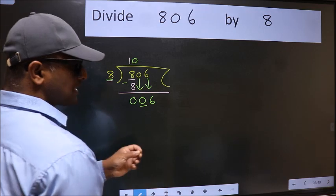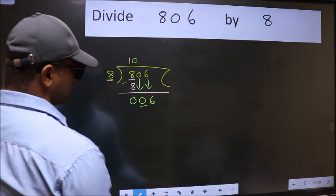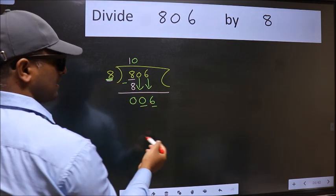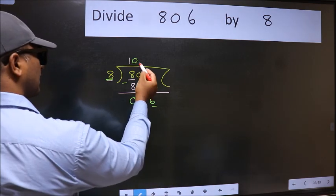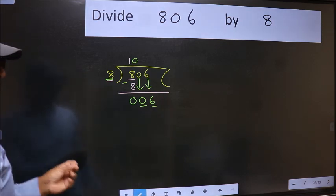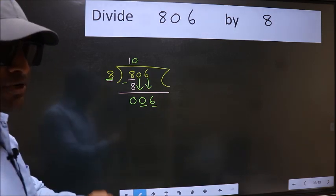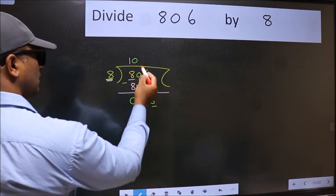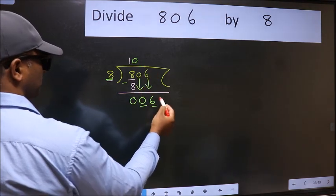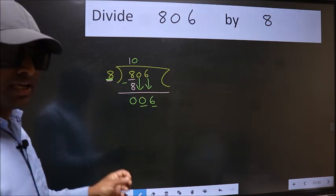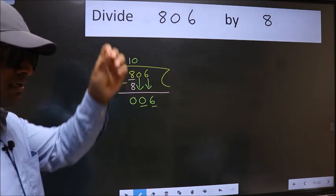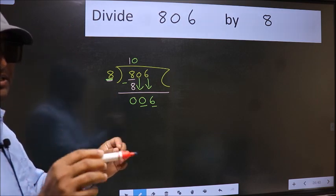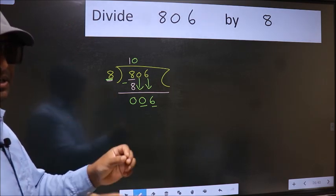After this step, the mistake happens. Here we have 6 and here 8. 6 is smaller than 8, so what many do is they directly put dot and take 0, which is wrong. Why is it wrong? Because just now you brought this number down, and in the same step you want to put dot and take 0 — bring down the number and put dot take 0 both at the same step. You should not do that.